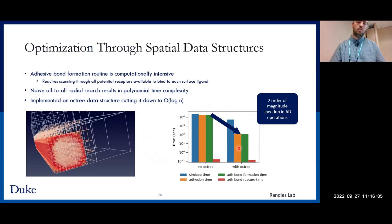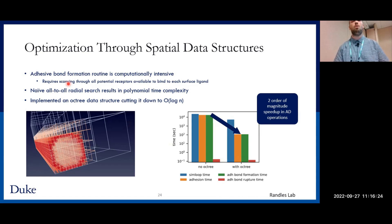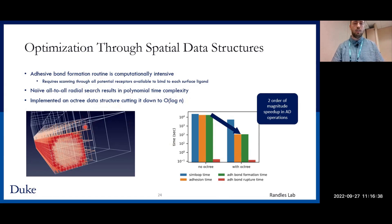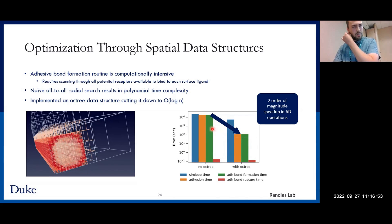We also made data structure optimizations, specifically employing spatial data structures like the octree for the adhesive bond formation routine — one of the most computationally intensive routines. For a given ligand on the cell surface, it searches for all nearby wall receptors available to bind. A naive all-to-all radial search gives polynomial time complexity. By implementing an octree data structure, we cut it down to logarithmic time. As shown in the figure, just by implementing the octree we achieved a true order of magnitude speedup in the adhesive dynamics operations — pretty massive gains from using the optimal data structure for fast lookup of wall receptors.